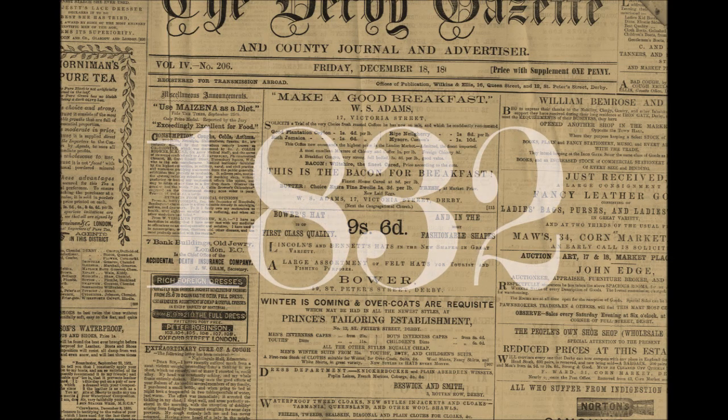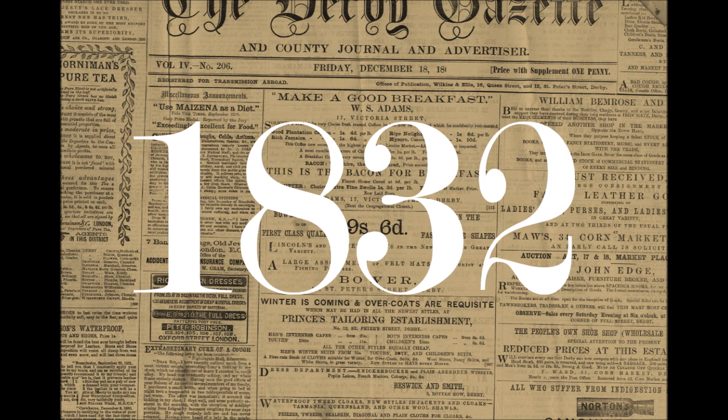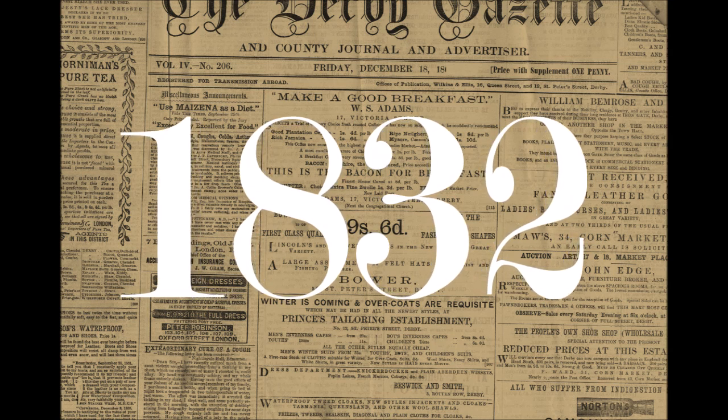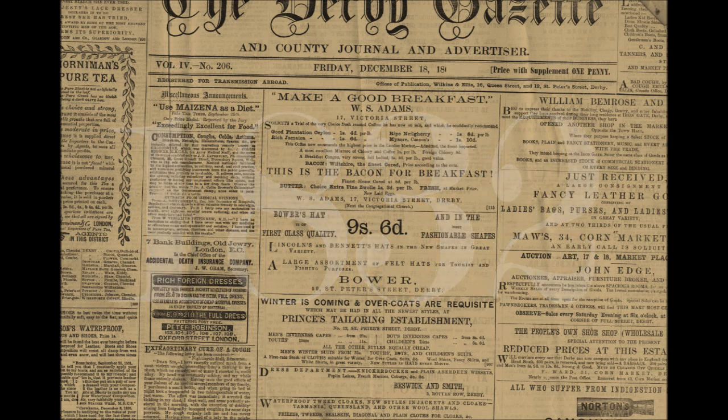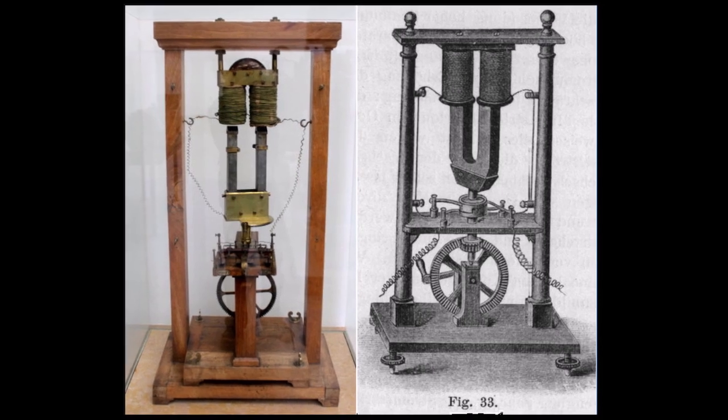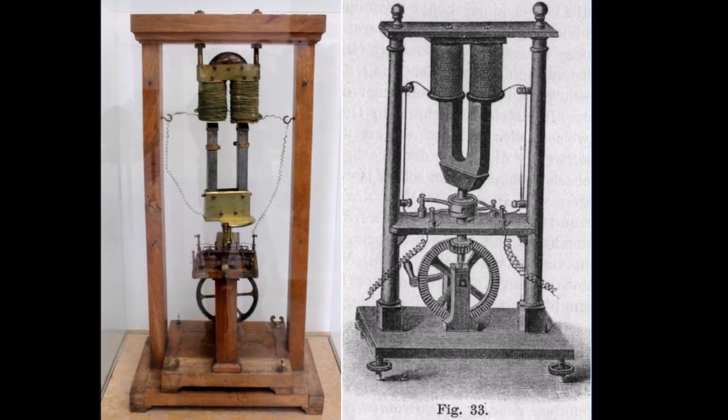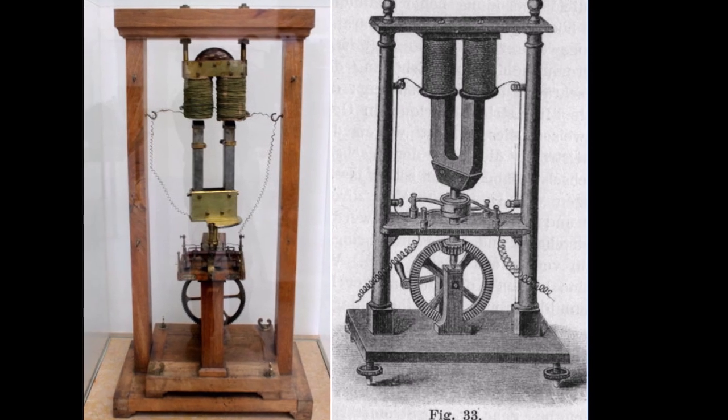In the same 1832, two more electromagnetic generators were invented. One of them was presented to the world by the Frenchman Pixie. Pixie's generator had two coils wound on a horseshoe-shaped core and a horseshoe-shaped magnet.